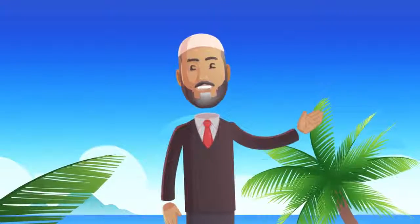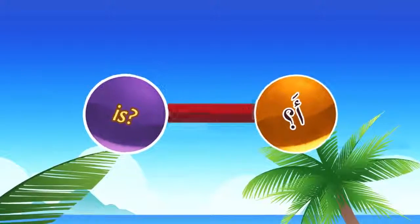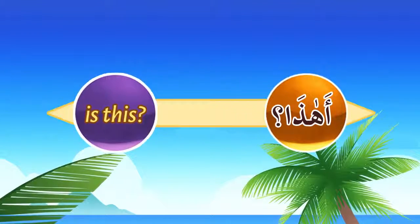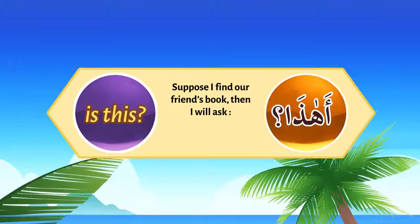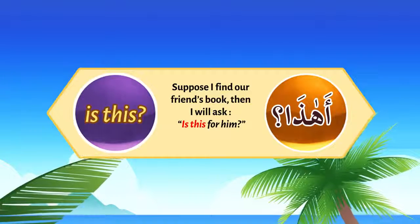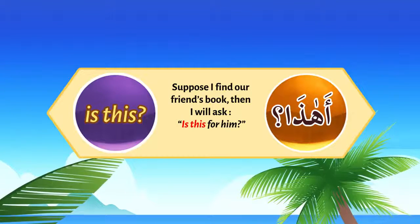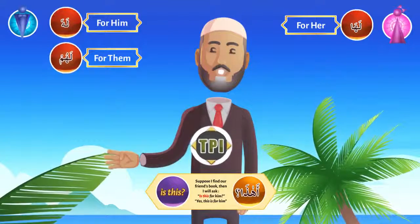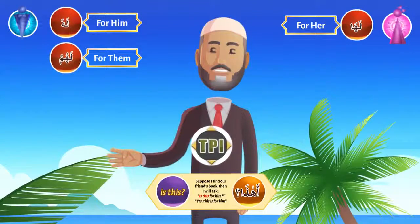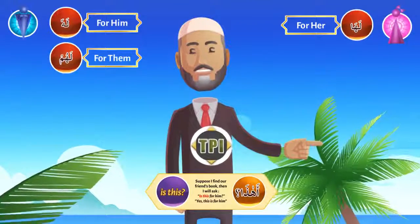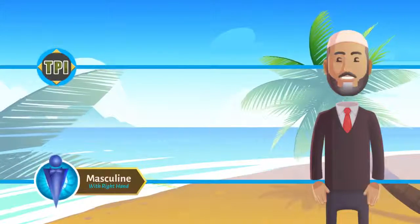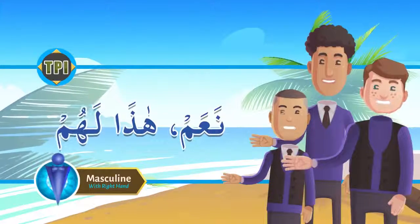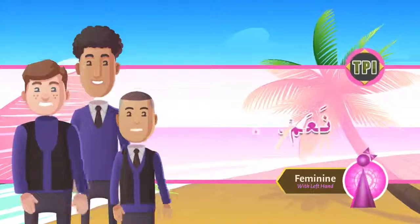Before going to the dialogues, let's take a new word: 'a', which is a question word. For example, 'ahada' means 'is this...?' Suppose I find our friend's book — I will ask: is this for him? Ahada lahoo? And you say: naam, haada lahoo. Extending: ahada lahum? Naam, haada lahum. Ahada lahaa? Naam, haada lahaa.